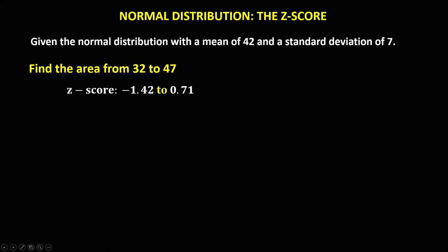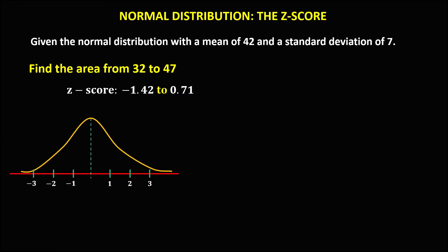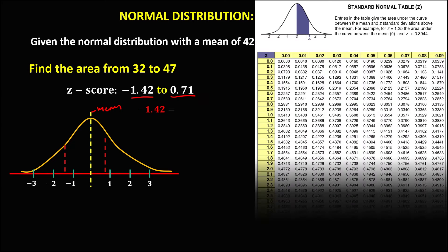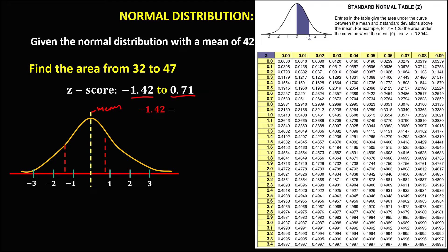For Z from negative 1.42 to 0.71, in a normal curve, let's assume this is negative 1.42 and this is 0.71. To find the area — take note from this curve, the center is the mean. To find the area for negative 1.42, we use this table, where the area is between the mean and the Z-score.